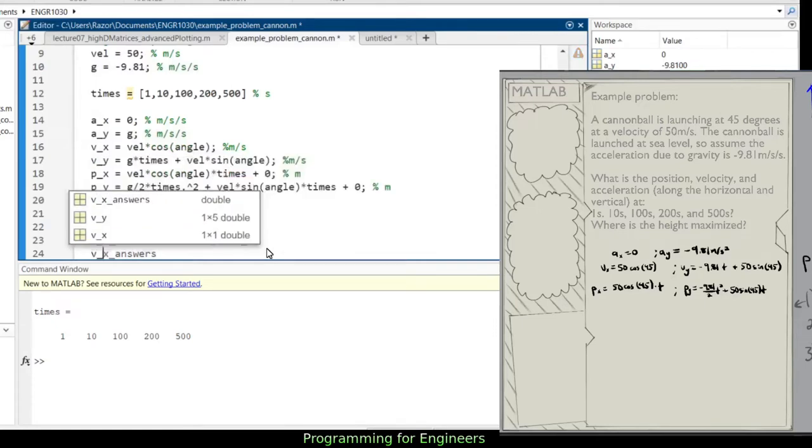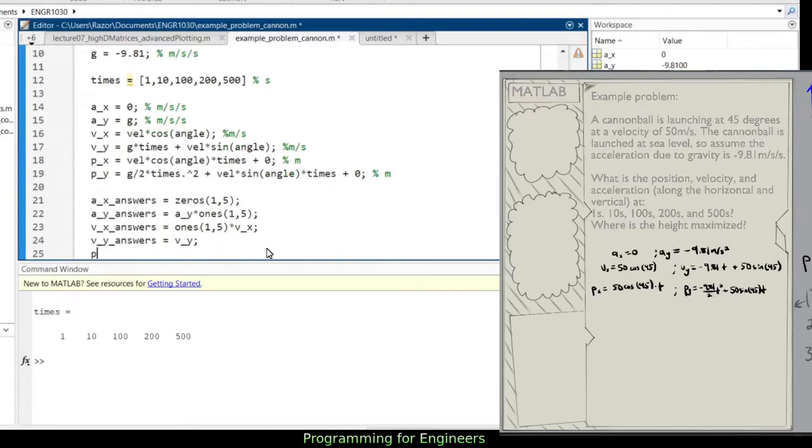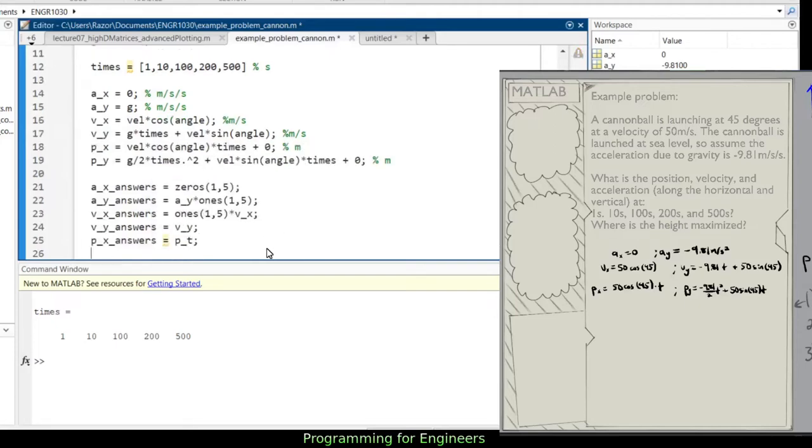Because again, it's the same across the board. And vy answers is the first one that's a function of t, so this will just be vy because it'll be a constant added to a scalar multiplied by a matrix. And then px answers is also a function of t, so we're just going to be px. Py answers is again a function of t, so py.